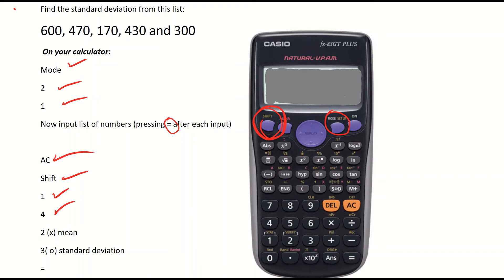In order to get the mean, it's the X with the little line above it. So you're clicking on the 2 on your calculator. If you click on 2 and hit your equals, it will show you a mean of 394.